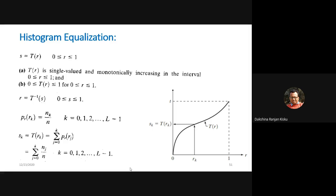If we assume that T(r) satisfies two conditions: the first condition says T(r) is single-valued and monotonically increasing in the interval 0 ≤ r ≤ 1. The second condition says 0 ≤ T(r) ≤ 1 for 0 ≤ r ≤ 1. We assume that the transformation function T(r) will satisfy both of these conditions.